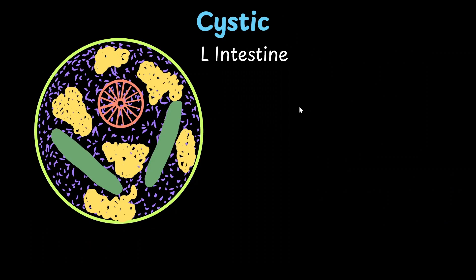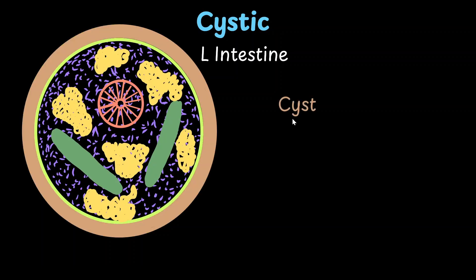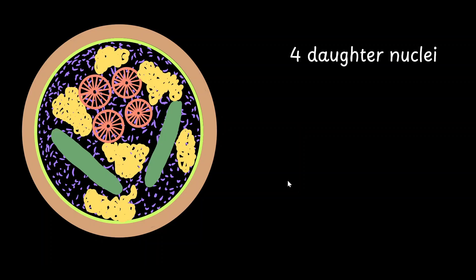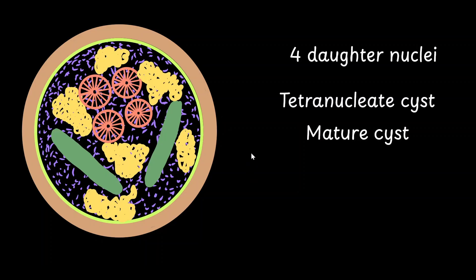Finally, we have the cystic stage, which is also found in the lumen of the large intestine. This cell is surrounded by a round, thin, delicate, and highly resistant cyst by the process of encystation. This cyst helps the cell survive unfavorable conditions like extreme pH changes as it passes through the digestive system of a new host. Immediately after encystation, the cell undergoes two successive mitotic divisions, resulting in four daughter nuclei. This stage is called the tetranucleate stage or the mature cyst, and this is the stage of Entamoeba that infects humans.